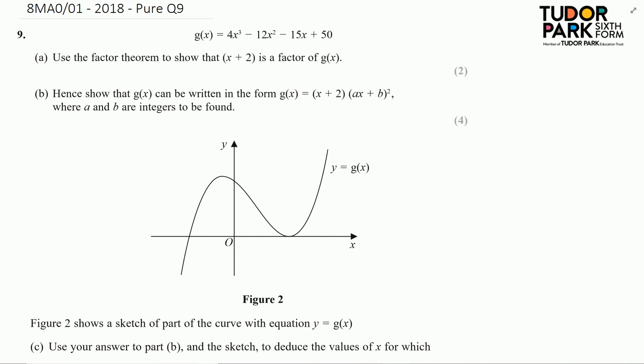On to question 9 and we're looking at using factor theorem to start with. So the factor theorem to show that that's a factor is going to be to show that g of minus 2 is equal to 0.